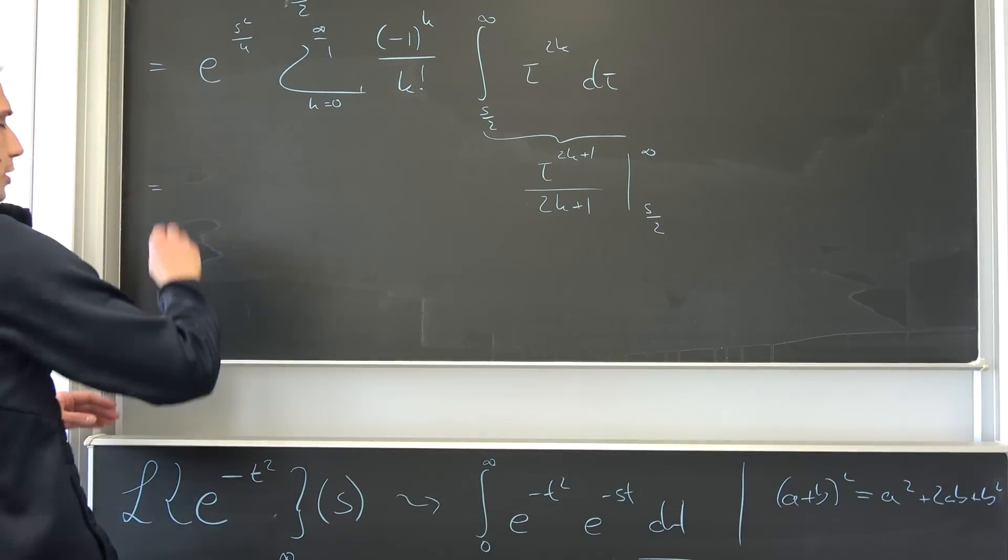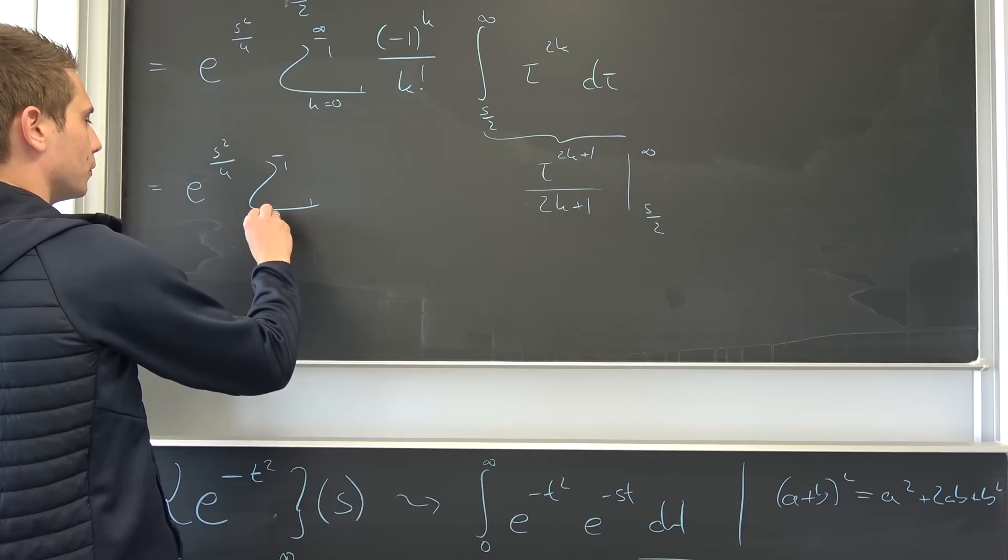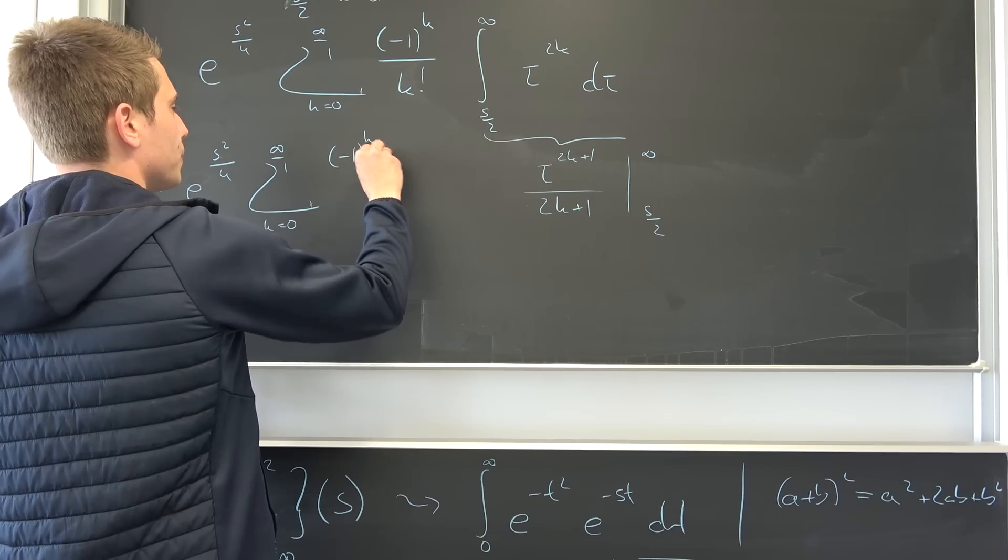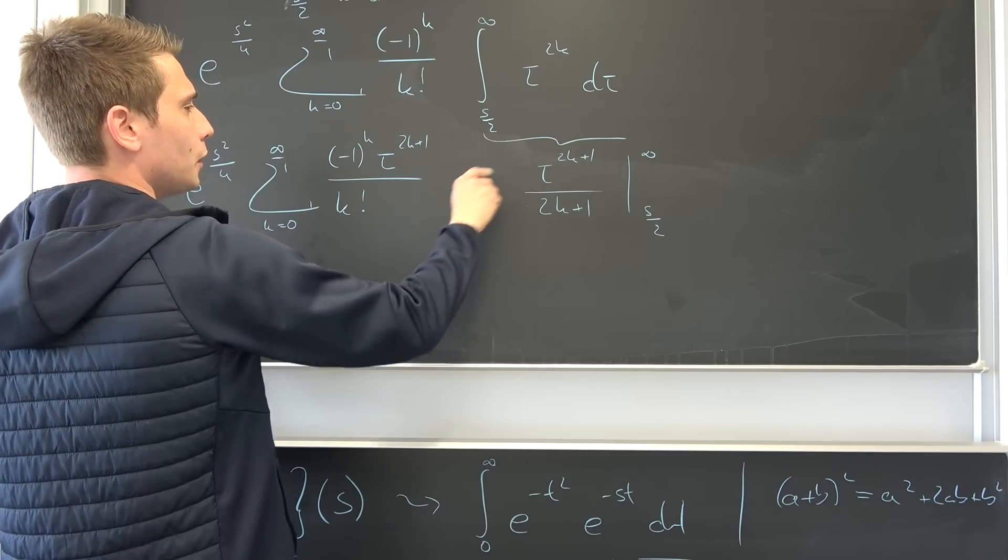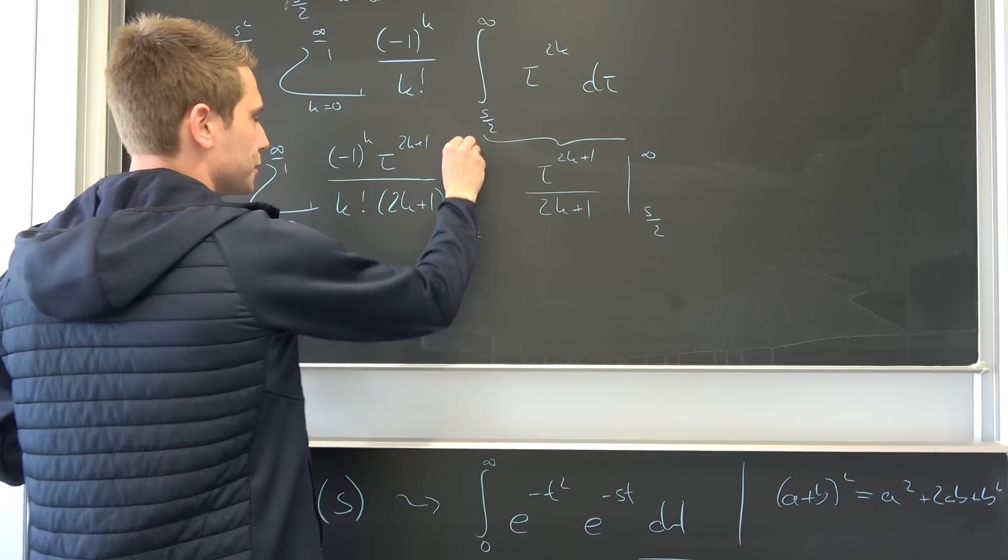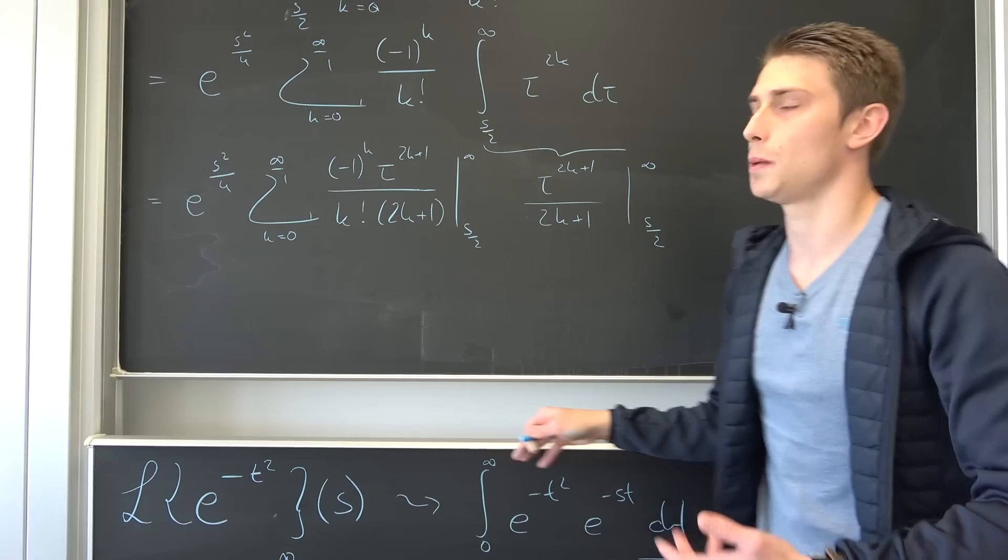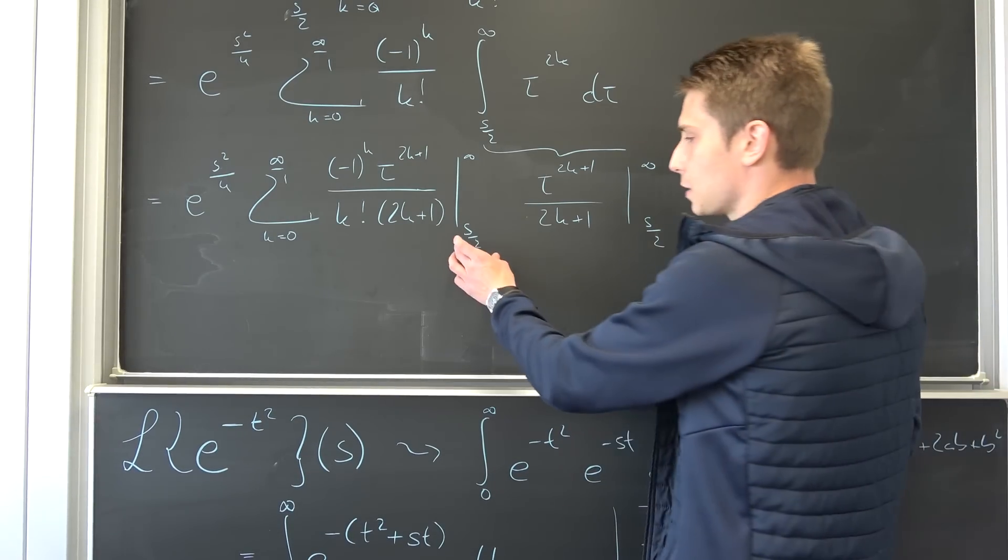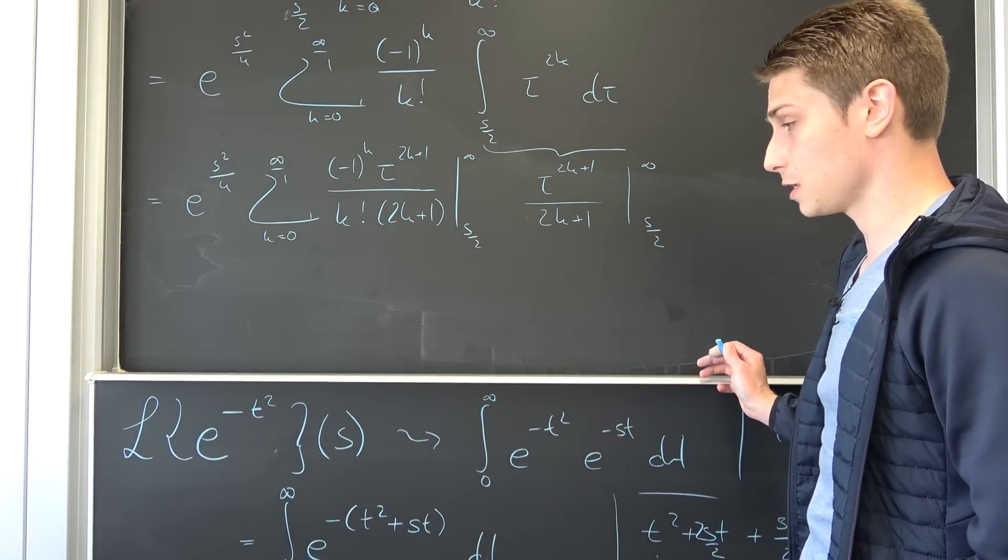So overall we can also express our Laplace transform as nothing but e to the s squared over 4. Then we have the infinity boy running from k being equal to 0 to infinity of negative 1 to the kth power tau to the 2k plus 1th power over k factorial times 2k plus 1 evaluated from s over 2 to infinity. And one cool thing is you now know what the Taylor series expansion of our complementary error function actually is or our error function in itself. It depends on the upper and lower bounds if it is complementary or the error function in itself. And this is basically it.